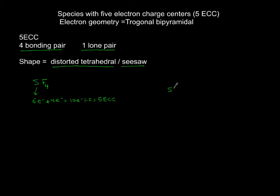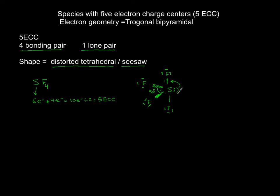Place sulfur in the middle with one lone pair of electrons. One fluorine attachment goes up, one goes down in the plane of paper, one fluorine comes toward you with a wedge dash, and one solid wedge goes into the plane. Saturate the fluorines with electrons to complete their octets. The angle between axial fluorines is 90 degrees. The angle between equatorial positions is less than 120 degrees — about 117 or 118 degrees — because the lone pair exerts stronger repulsion, pushing the bonded fluorines slightly.